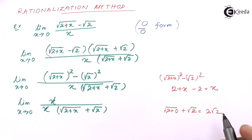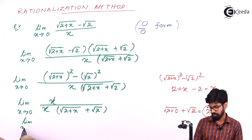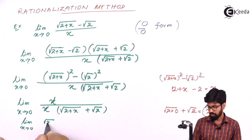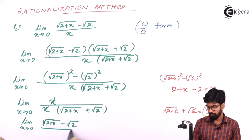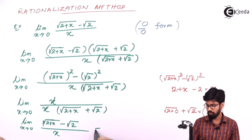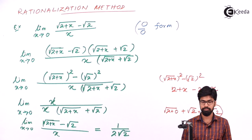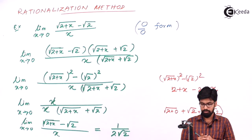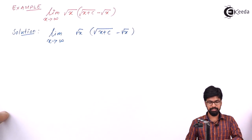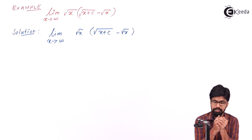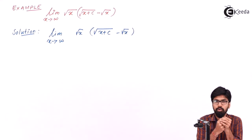So in the denominator we get 2√2. The final answer is: limit x tends to 0 of [√(2+x) − √2] / x = 1 / (2√2). Thank you. Let us understand this method of rationalization by taking one more example.